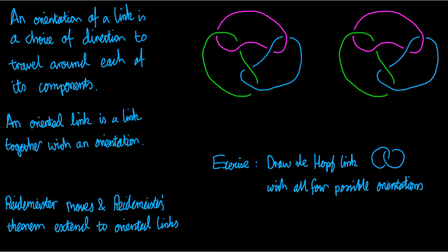So what is an orientation? An orientation of a link is a choice of direction in which to travel around each of the components of the link. In the pictures here, I could choose to travel around this component this way, travel around the pink component anti-clockwise, and travel around the blue component clockwise.